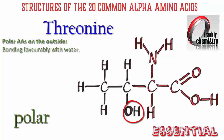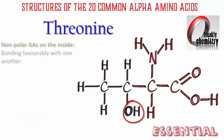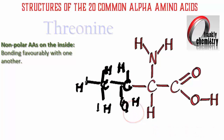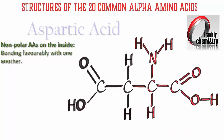Here's threonine, which also has an OH group. And conversely, the nonpolar amino acids tend to be found on the inside of the folded polypeptide chains.